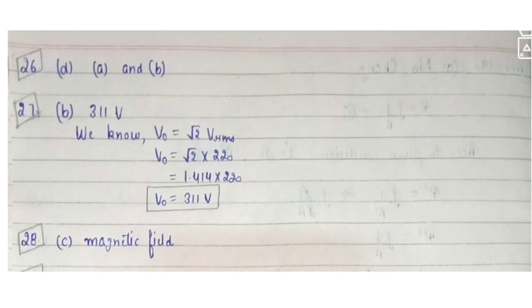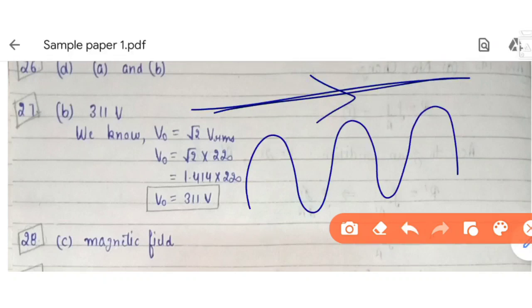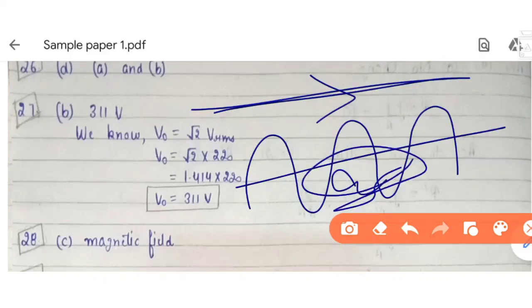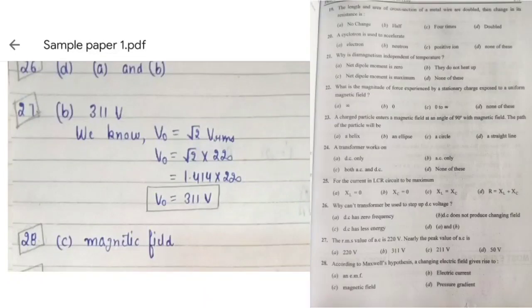Question 26: why cannot a transformer be used to step up DC voltage? Because DC has zero frequency and does not produce a changing magnetic field. Without a changing field, there is no induced current. DC is a straight (constant) current, whereas AC alternates — both reasons A and B are correct options.